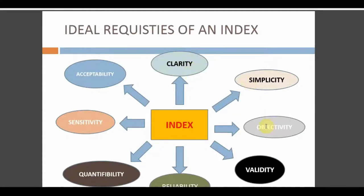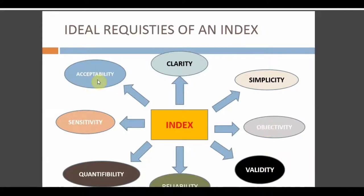The criteria of an index should be very clear, simple, and objective. 'Objective' means the examiner — not the patient — determines the findings. The patient is the subject; the investigator is the object. The researcher's judgment is the final word, not the patient's opinion. The index should also be acceptable to the patient.